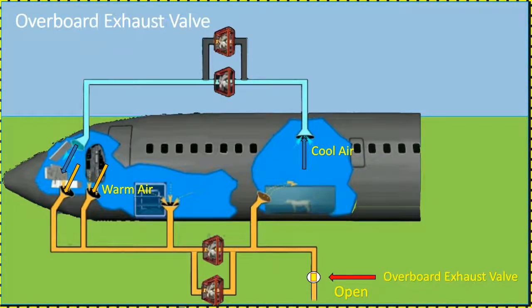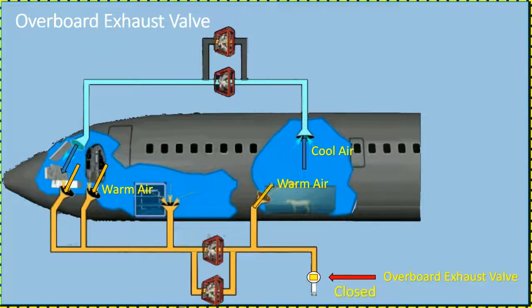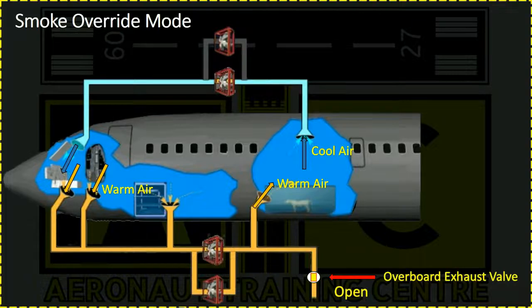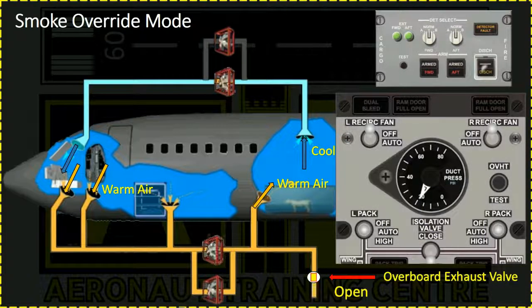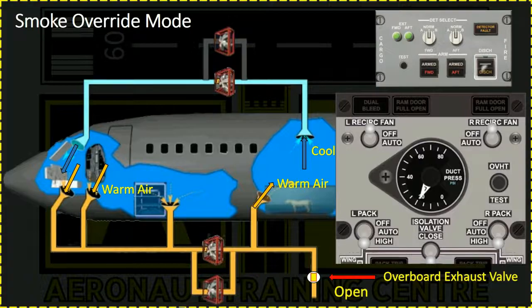The overboard exhaust valve lets exhaust air go overboard when the airplane is on the ground. In flight, the exhaust air adds heat to the forward cargo compartment. A check valve isolates the exhaust air from the cargo compartment when the airplane is airborne and the overboard exhaust valve is open. In smoke override mode, when the air crew carries out the forward cargo fire checklist, they turn off the recirculation fans and select high flow for the packs. This puts the equipment cooling system into smoke override mode, causing the overboard exhaust valve to open and a check valve to prevent air from the forward cargo area from being vented.